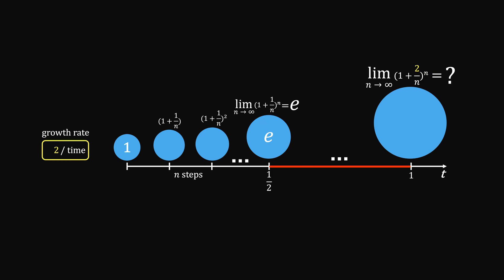So by 1 unit time, we should have e to the power of 2 units. Similarly, when we triple the growth rate,